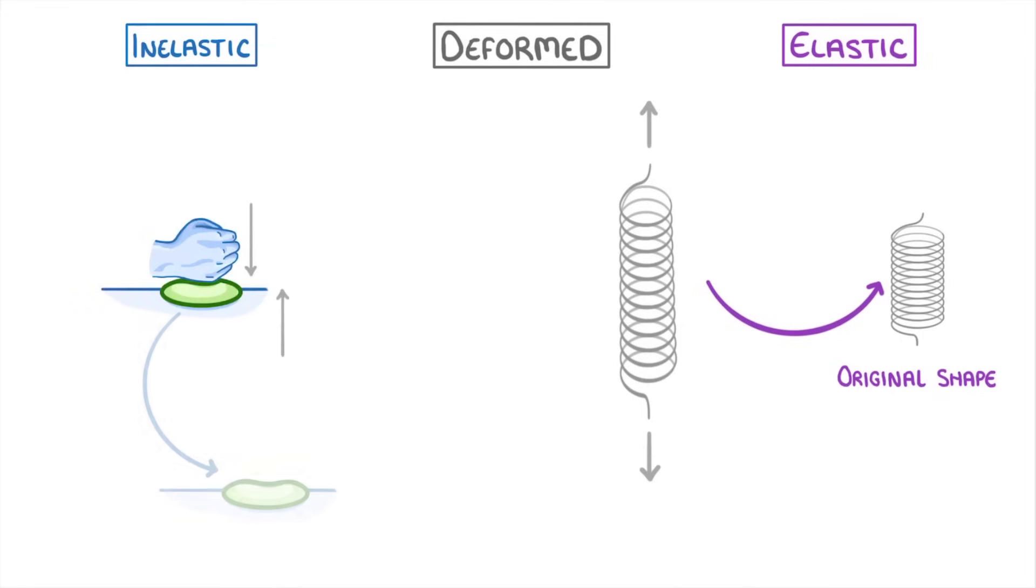However, if the object doesn't quite return to its normal shape and stays deformed in some way, then we call it inelastic deformation, or sometimes plastic deformation, because it keeps its shape like plastic.